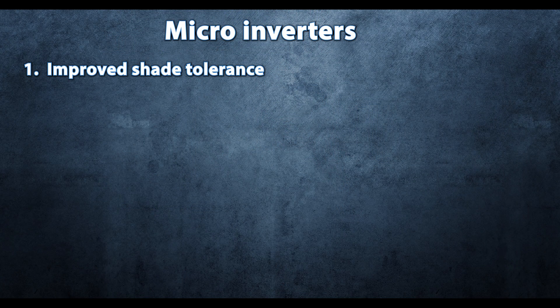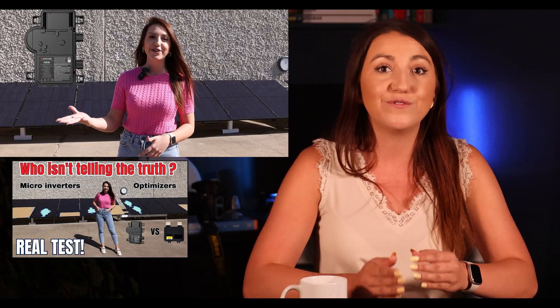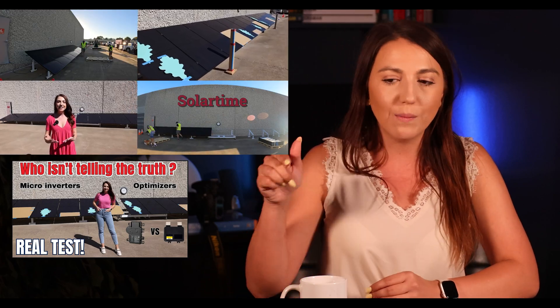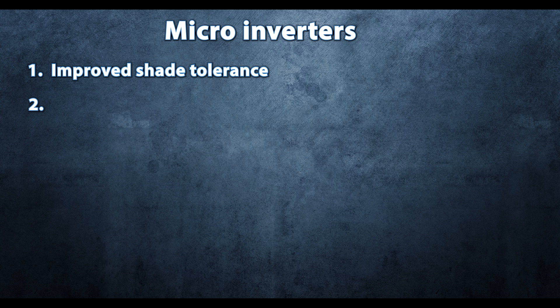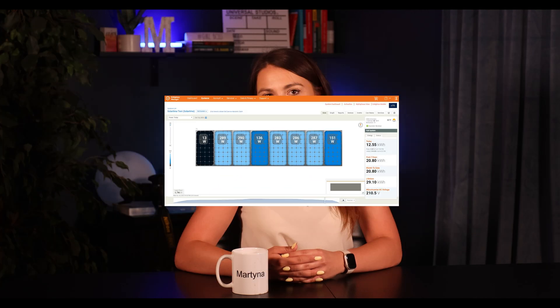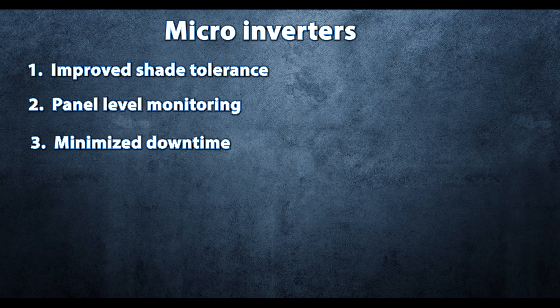What are the advantages of microinverters? Number one: improved shade tolerance. Based on my testing of microinverters versus power optimizers, we got about 3% improvement in significant shading conditions — I'll link that test down below. Number two: panel-level monitoring. Microinverters allow for panel-level monitoring, enabling easy identification of underperforming panels. Number three: minimized downtime. The distributed nature of microinverters ensures that if one inverter experiences issues, only the corresponding panel is affected, significantly reducing the potential for system-wide downtime.